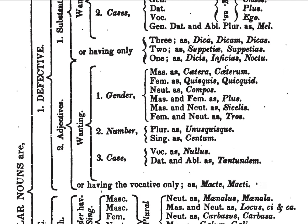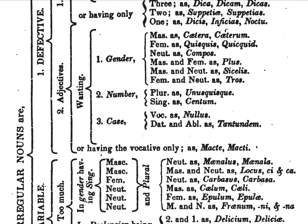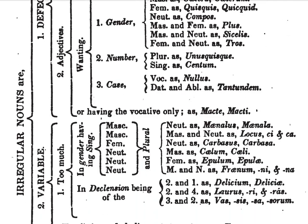Then we have those lacking — or as he says here, wanting — number: plural, and unus quisque in singular, as in centum. Those that are lacking case, as in nullus; and also tantundem. Or those having the vocative only, as in macte and mactii.